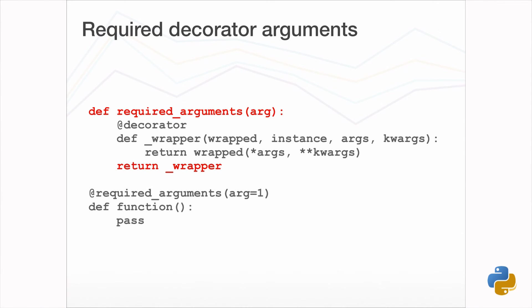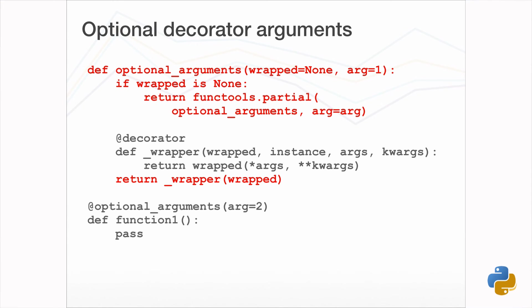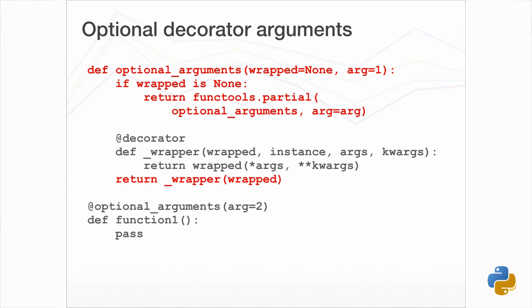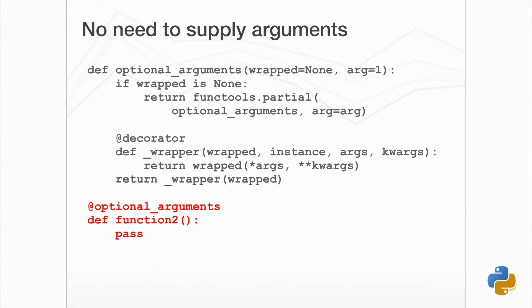The decorator so far did not allow arguments to be supplied when applied to a function. If arguments to the decorator are required, the decorator definition can be nested within a function to create a function closure — when the outer decorator factory function is used, it returns the inner decorator function. If arguments have default values, the outer decorator function takes the wrapped function as the first argument with None as default, and decorator arguments follow as keyword arguments. On the first call wrapped is None and a partial is used to return the decorator factory again; on the second call the wrapped function is passed and is wrapped using the decorator. With default arguments you don't actually need to pass arguments, and the decorator factory is applied directly.